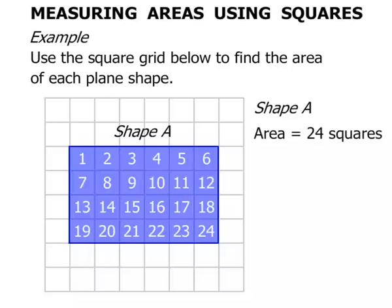So shape A has an area equal to 24 squares. Now we counted those squares one by one. You might have found a quicker way to do that.